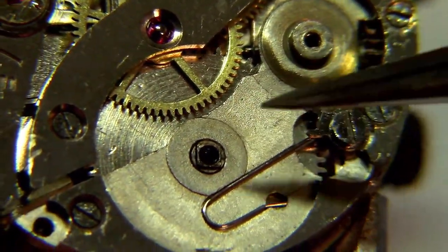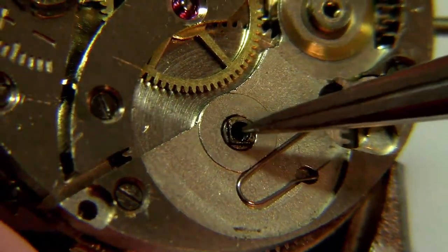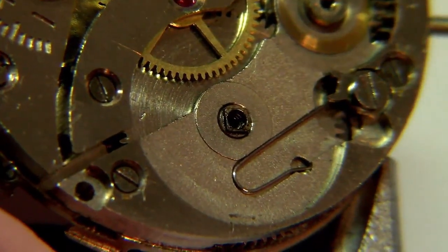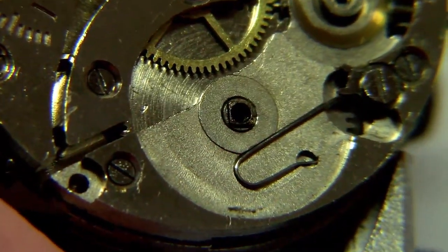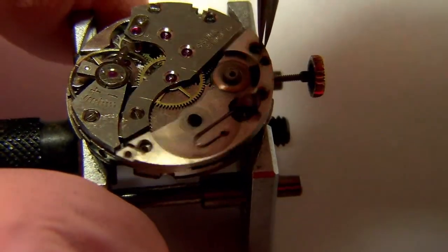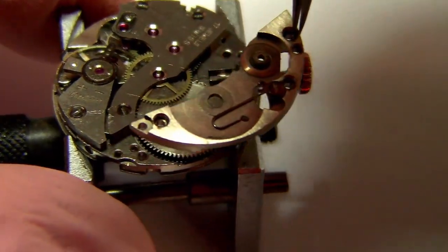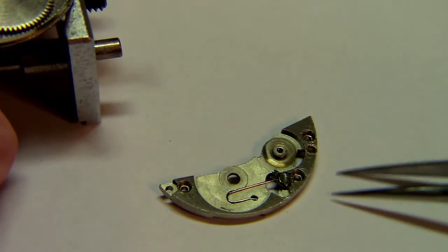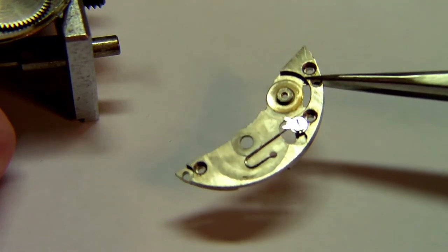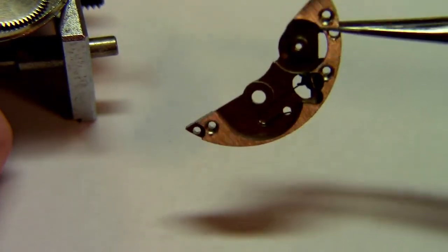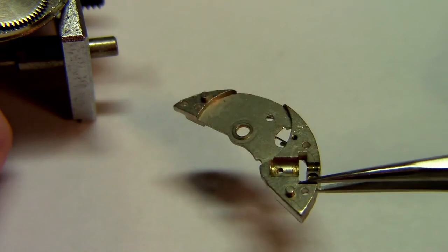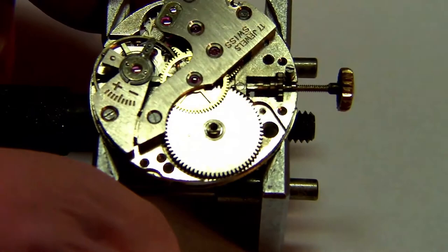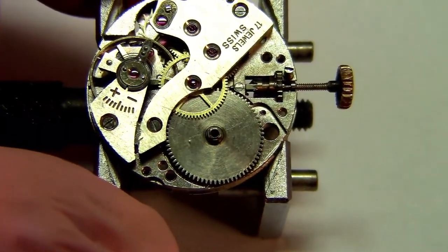The transmission wheel transmits to the ratchet wheel, which is screwed directly to the barrel arbor or mainspring arbor that you are seeing here. Here I'm removing the bridge, and this is what we have right below it.